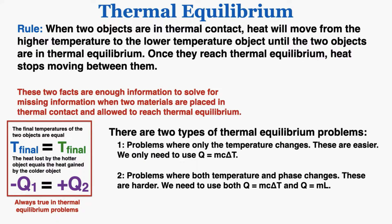These two facts are enough information to solve for missing information when two materials are placed in thermal contact and allowed to reach thermal equilibrium. There are two types of thermal equilibrium problems: problems where only the temperature changes, which are easier and only require Q = mcΔT, and problems where both temperature and phase change, which are harder and require both Q = mcΔT and Q = mL.